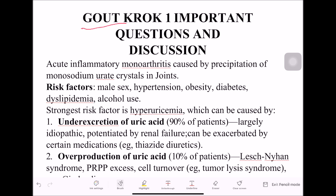Gout is an acute inflammatory monoarthritis caused by precipitation of monosodium urate crystals in joints — that is uric acid or uric acid salts which accumulate in the joints. We also call it podagra.